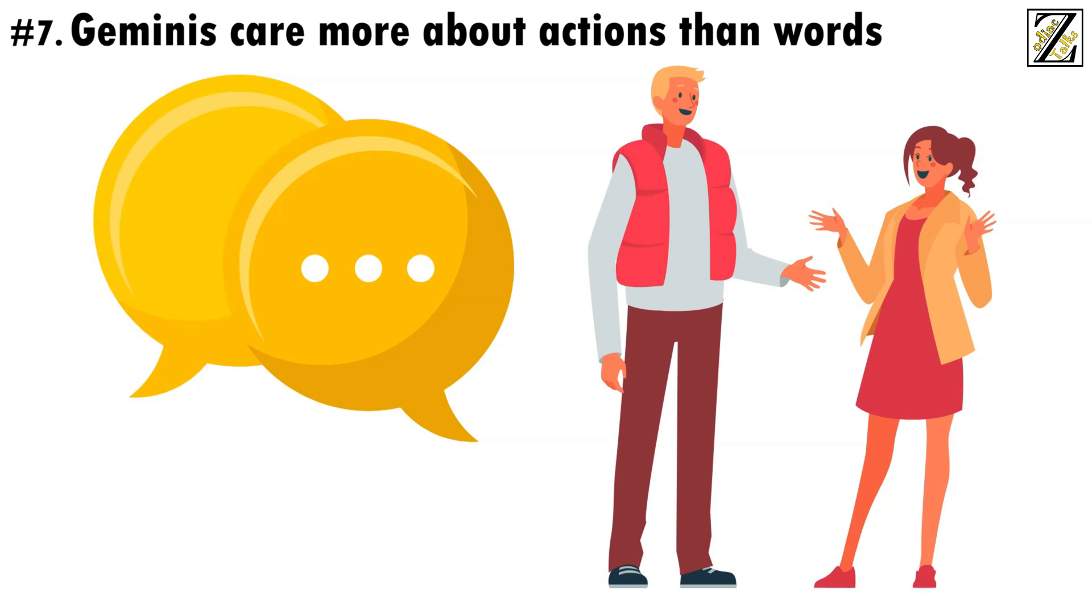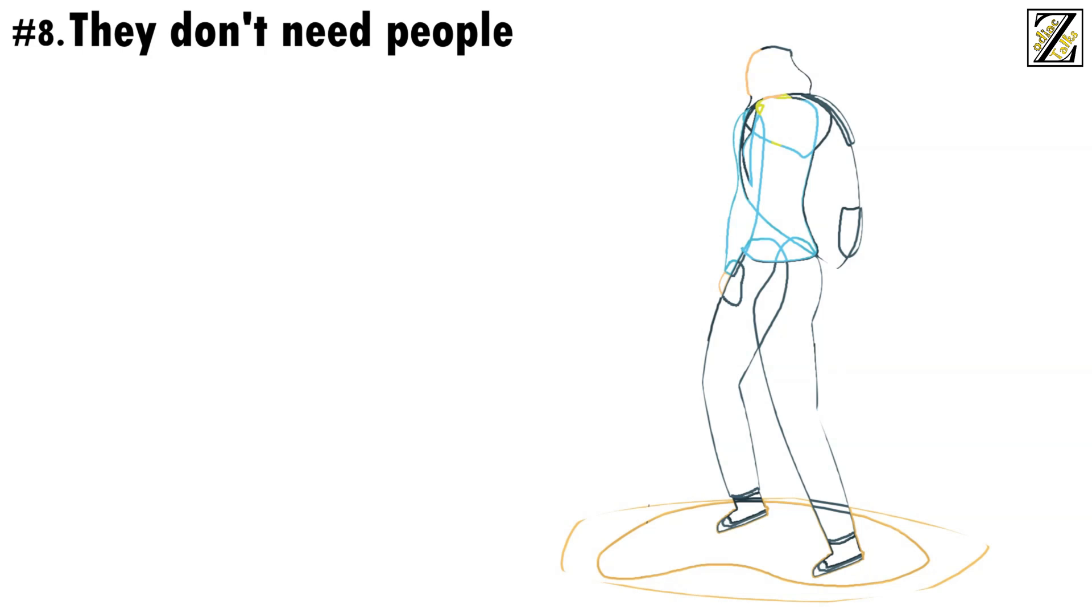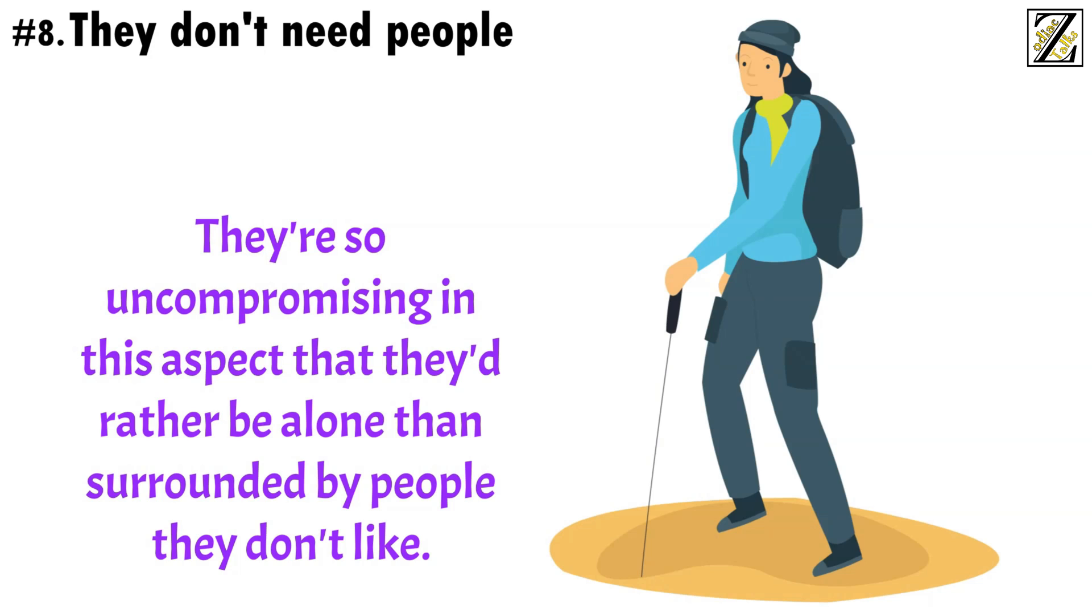Number 8, They don't need people. Though Geminis can be remarkably social, they can also be tremendously independent, which means that, while they enjoy other people's company, they don't depend on it. They're so uncompromising in this aspect that they'd rather be alone than surrounded by people they don't like.